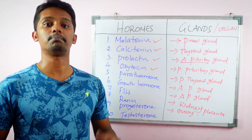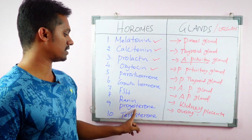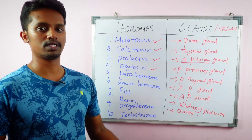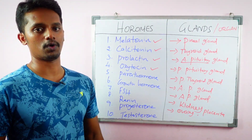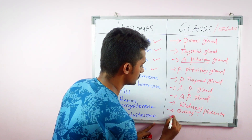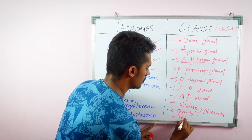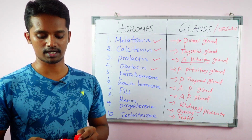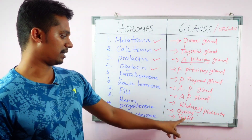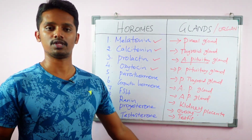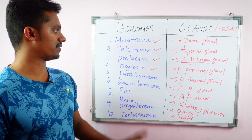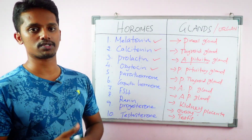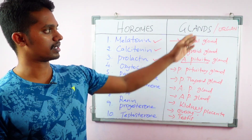The last hormone is Testosterone. Testosterone is the main male sex hormone — if Progesterone is a female sex hormone, Testosterone is the male equivalent. It is produced by the male gonad, the Testis. Overall, these are the ten hormones produced by different glands or organs.